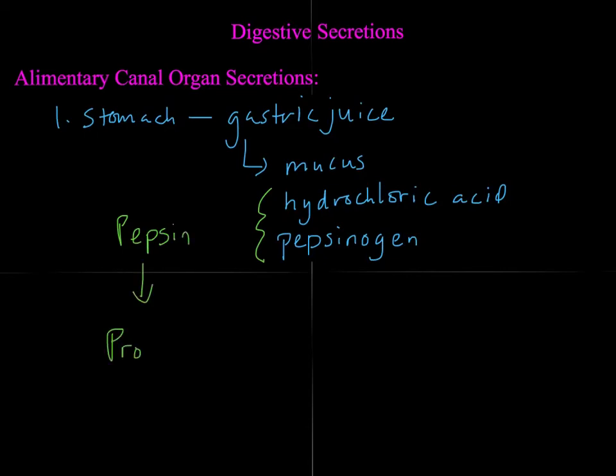Next is the liver, which produces a substance called bile that emulsifies fat. Emulsified means it traps or packages fats to be digested, broken down, or passed on as waste. The gallbladder is associated with the liver, and its function is to store bile.